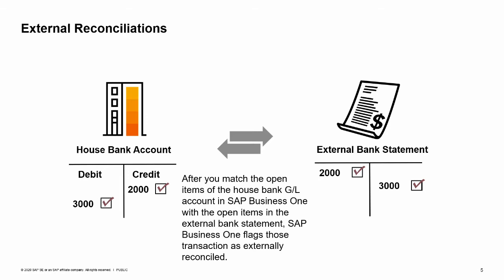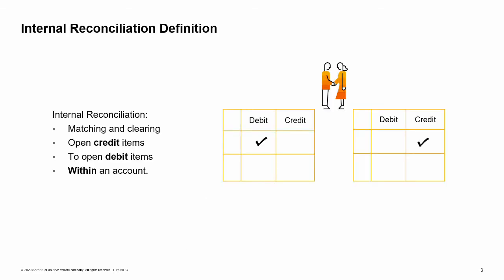In SAP Business One we also have the internal reconciliation process, which is separate to the external reconciliation process. Internal reconciliation refers to the matching and clearing of open credit items to open debit items within an account — therefore internal. This is necessary for accounts where a business process is not regarded as fully complete until each credit amount has a corresponding debit amount. For customer accounts, a receivable (debit) must be followed by an incoming payment (credit). For vendor accounts, a liability (credit) must be followed by an outgoing payment (debit).